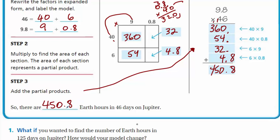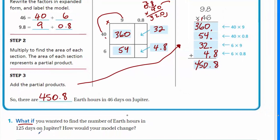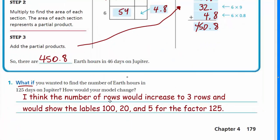There are 450.8 Earth hours in 46 days on Jupiter. Now it says, what if you wanted to find the number of Earth hours in 125 days on Jupiter? Well, up above we had 46 days. Now we have 125. The number's larger. We would need to increase it to three rows here. We'd have to have the 100, the 20, and the 5.